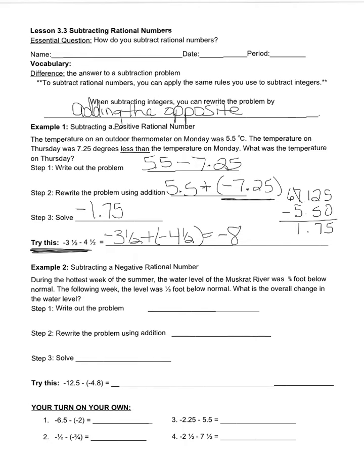Now, for our second example, we are going to subtract a negative rational number. During the hottest week of the summer, the water level of the Muskrat River was 5/6 foot below normal. The following week, the level was 1/3 foot below normal. What is the overall change in the water level?